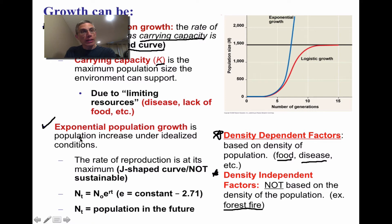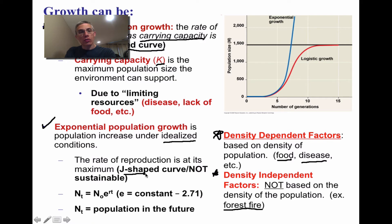The second type of growth is exponential population growth, which occurs under ideal conditions where reproduction is at its maximum. This causes the graph to take on a J-shaped curve. In most cases, exponential growth is not sustainable within a population. On the graph, the blue line represents exponential growth.